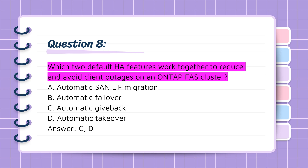Question 8: Which two default HA features work together to reduce and avoid client outages on an ONTAP FAS cluster? A. Automatic SAN leaf migration. B. Automatic failover. C. Automatic giveback. D. Automatic takeover. Answer: C, D.